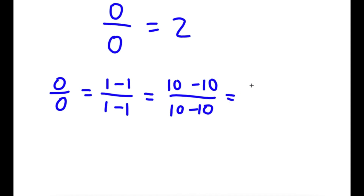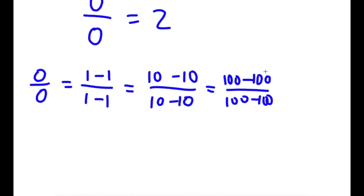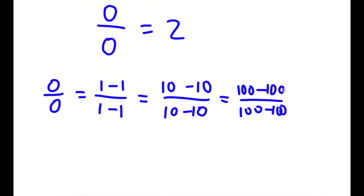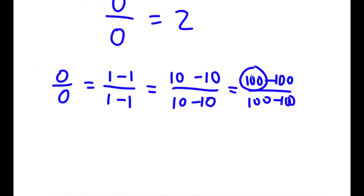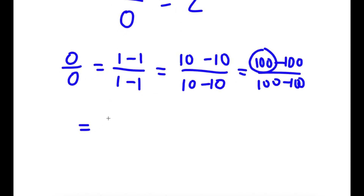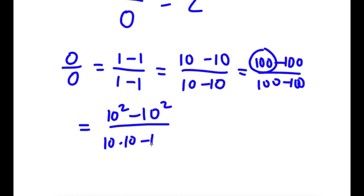And 10 minus 10 over 10 minus 10 is the same as 100 minus 100 over 100 minus 100, since 100 minus 100 is also 0. Now I'm going to simplify 100 minus 100 over 100 minus 100. Since 100 is 10 squared, the numerator is 10 squared minus 10 squared, and for the denominator I'll write 10 times 10 minus 10 times 10. This is still 0 over 0.